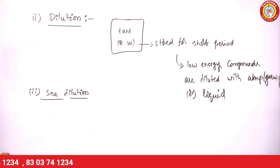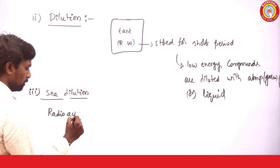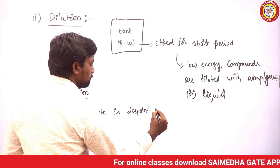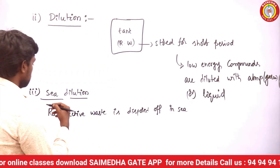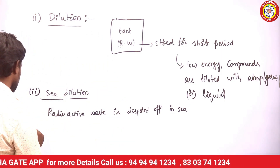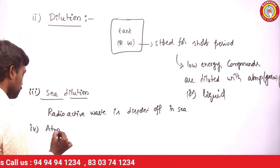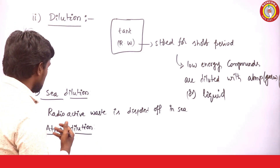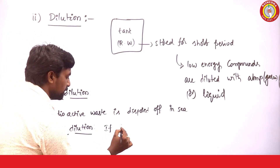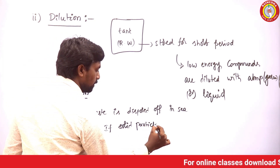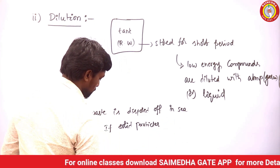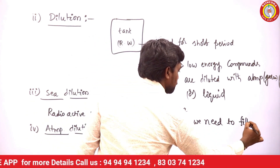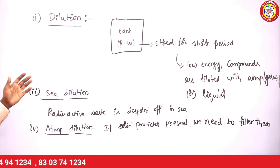Sea dilution means radioactive waste is disposed of in the sea. Atmospheric dilution is also done — gases are diluted into the atmosphere. For atmospheric dilution, solid particles must be filtered before release into the atmosphere. This is atmospheric dilution.